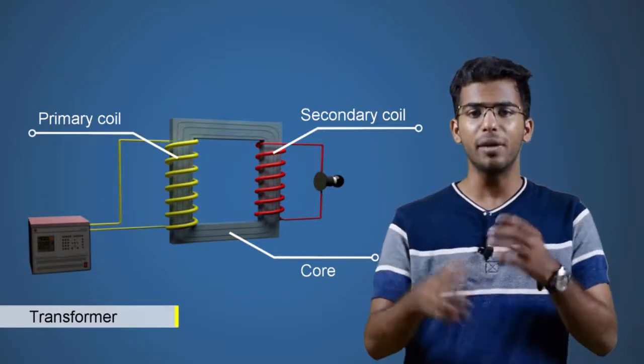As we learned in the last video, there are three main parts in a transformer. Now let us learn how these parts help in electrical transmission. Here we have a transformer with a core, primary and secondary coils, and a power source.